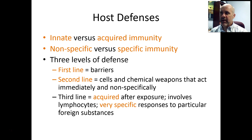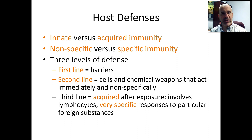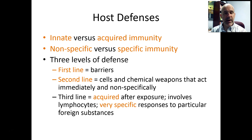Specific immunity gets down to the strain level. You'll develop weapons against a particular strain of flu that may not work for the next strain the following year. Similarly, when you get exposed to chickenpox, you develop a very specific set of cell weapons and antibody weapons that will attack that chickenpox virus if you're ever exposed to it again. We'll get more into specific immunity in Chapter 13.